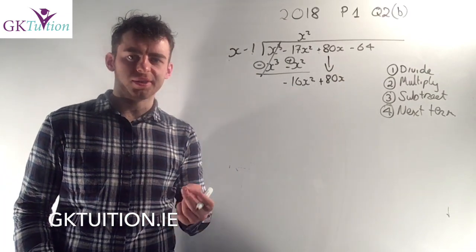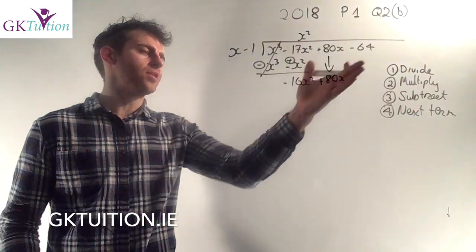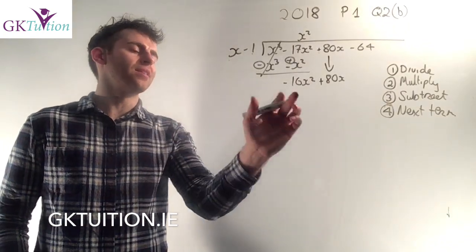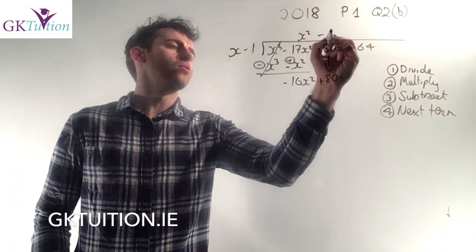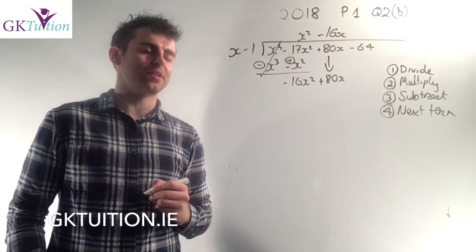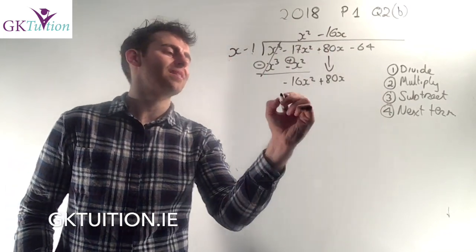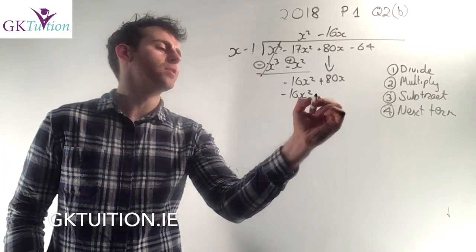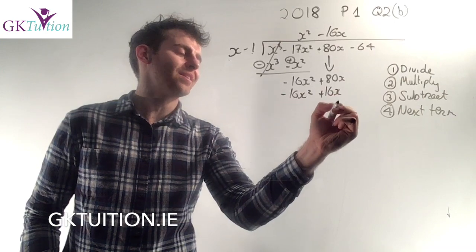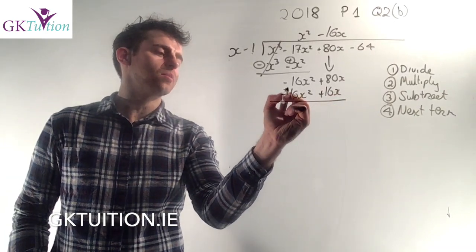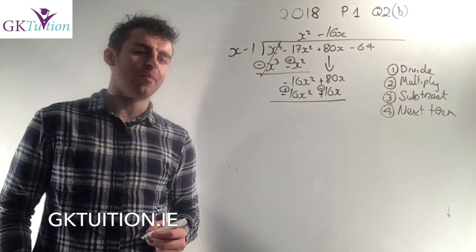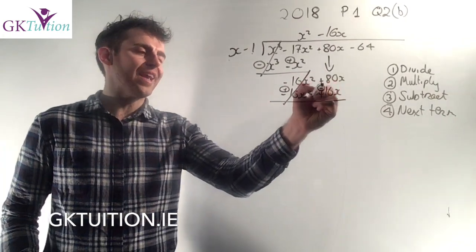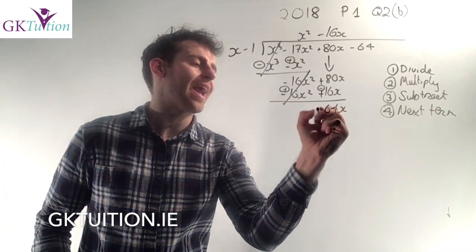And then we just start our process all over again. The first step here is divide. So you take the first thing here and you divide it into the first thing here. x into minus 16 x squared goes minus 16 x times. Minus 16 x multiplied by x is minus 16 x squared. Minus 16 x by minus 1 is plus 16 x. Now I need to change my signs and subtract. So I get a plus and I get a minus. Minus 16 plus 16 is 0, plus 80 minus 16 is plus 64 x.